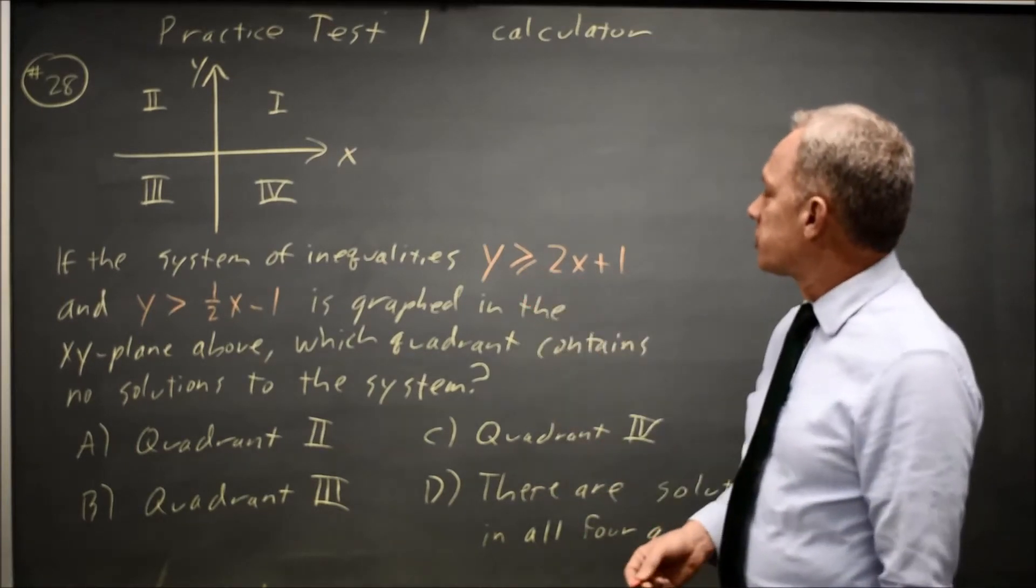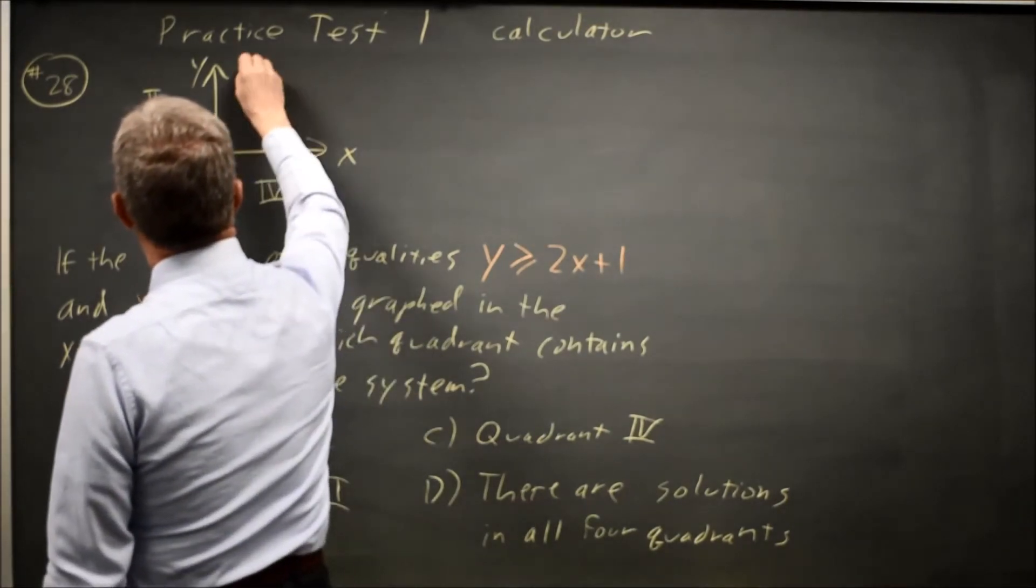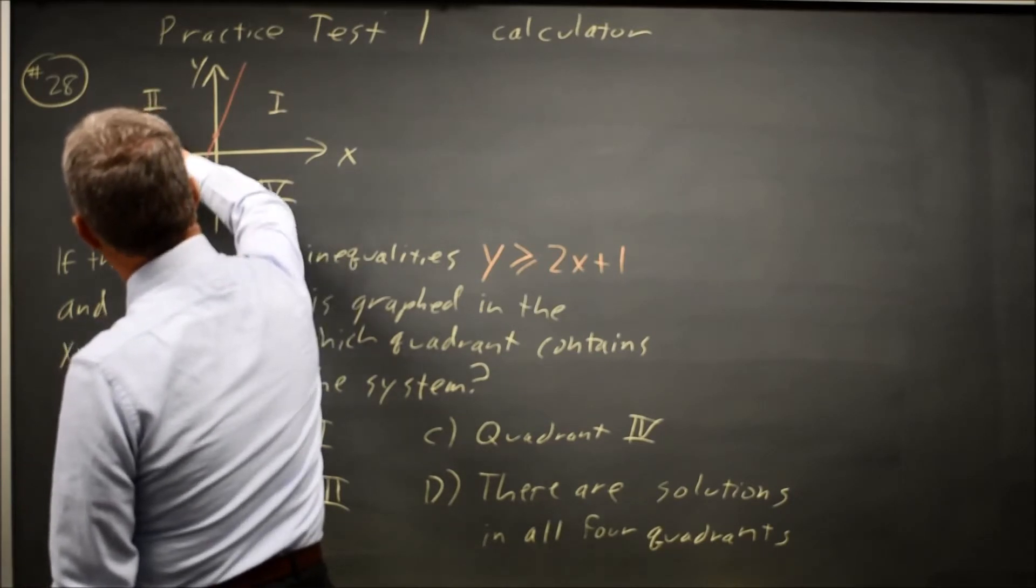The first one, y greater or equal to 2x plus 1. Y equals 2x plus 1 has an intercept of positive 1 and a slope of positive 2. And if the y value is greater, then I'm above that line.